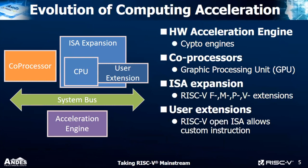Let's look at the evolution of computing acceleration — there are four major methods. First is acceleration engines like crypto engines. Second is big-core processors like GPU or FPU. Third is standard ISA expansion such as RISC-V M, P, and V extensions. Fourth is custom extensions using an open ISA that allows designers to create customized processors with custom instructions, custom ports, and custom memories.